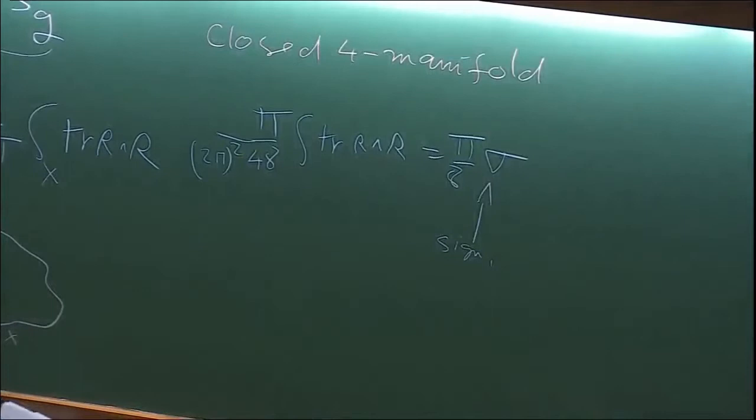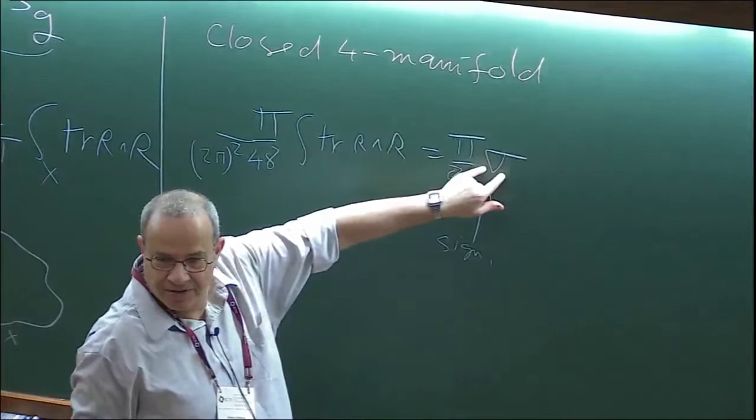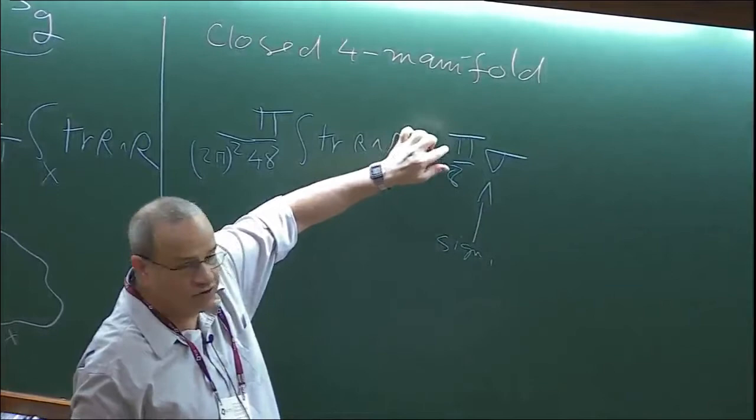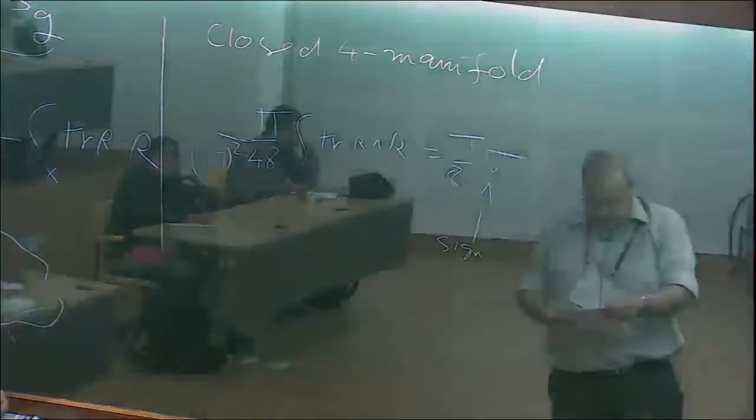On every closed manifold, phi over 48 times the integral of trace R wedge R equals π over 8 times sigma, where sigma is the signature of the manifold. On an ordinary manifold which is not necessarily spin, sigma can be an arbitrary integer. That tells us what multiplicative factor we have to put — we need to put a multiplicative factor of 16 to make it well defined. But if we have a spin structure and limit ourselves to spin manifolds, then what I wrote is meaningful — even without the factor of 2 it is well defined.